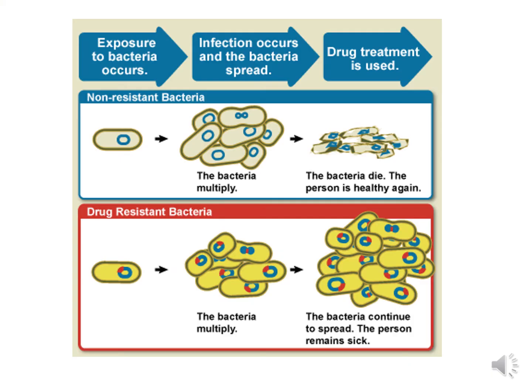So what happens when your body is infected with non-resistant bacteria? The bacteria multiply through binary fission, the infection spreads and you will start to become sick. You would then take antibiotics to treat the infection, the bacteria will die and you'd get better again.